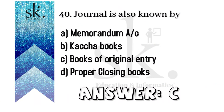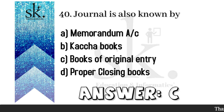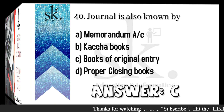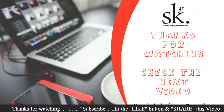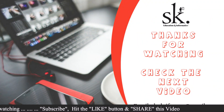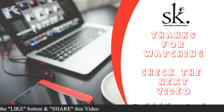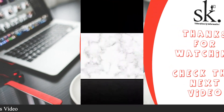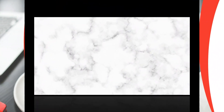The last question: journal is also known by — a memorandum, a kaccha book, a book of original entry, or a proper closing book. The answer will be C — book of original entry. I hope you have got the answers with respect to the multiple choice questions related to introduction to accounting part two. Soon I will be uploading part three. Till then, thank you and have a nice day.